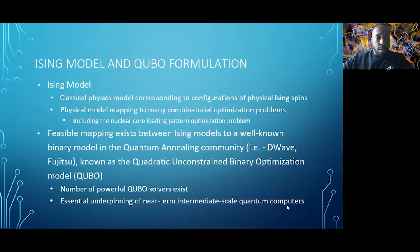We have the Ising model, which is the classical physics model corresponding to configurations of physical Ising spins. This physical model maps to many combinatorial optimization problems, a very popular field of optimization research. Within that scope, we also involve nuclear core loading pattern optimization problems, which is our specific application here.